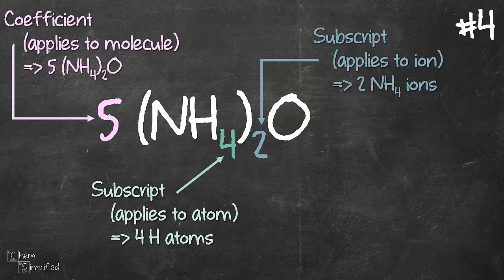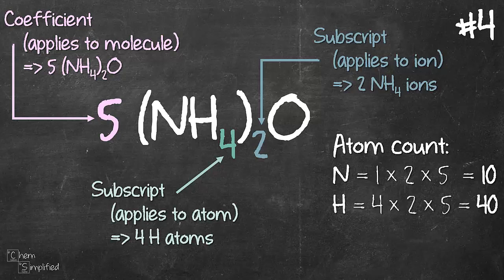So that means whatever atom counts we have in that formula, it is now multiplied by 5. So what's our total atom count? N, we have 1 of it, but since there's a 2 outside of the bracket and a 5 in front of it, that means we have 1 times 2 times 5 equals 10 Nitrogen. H, we have 4 of it, but because we have a 2 outside of the bracket and a 5 in front, so 4 times 2 times 5 equals 40.